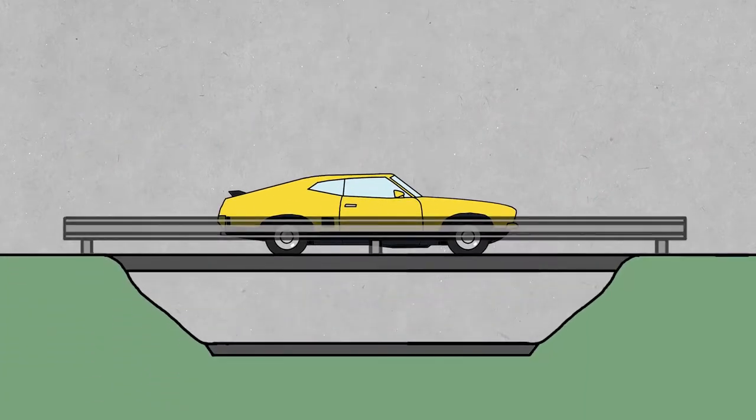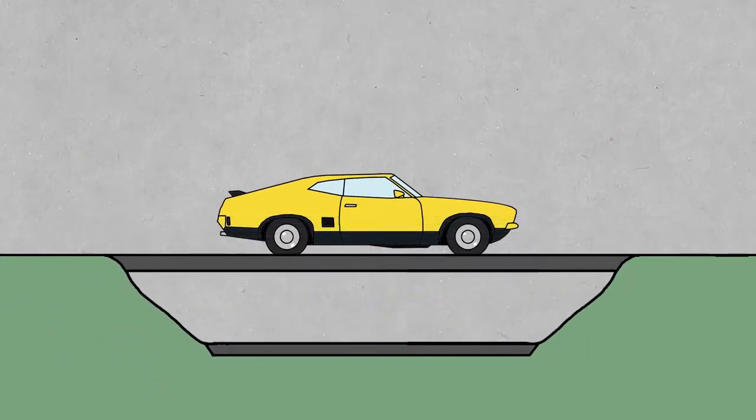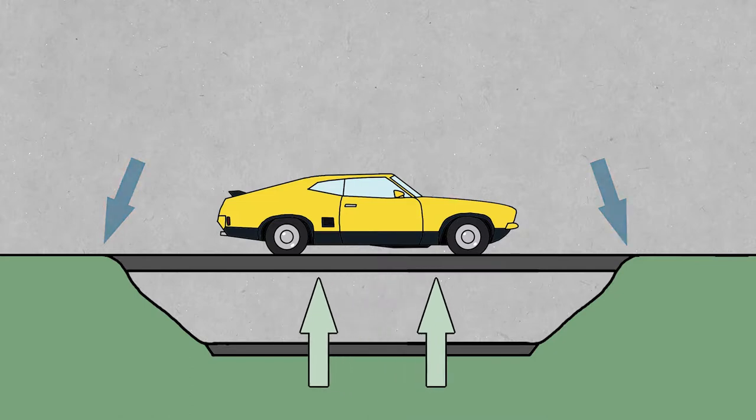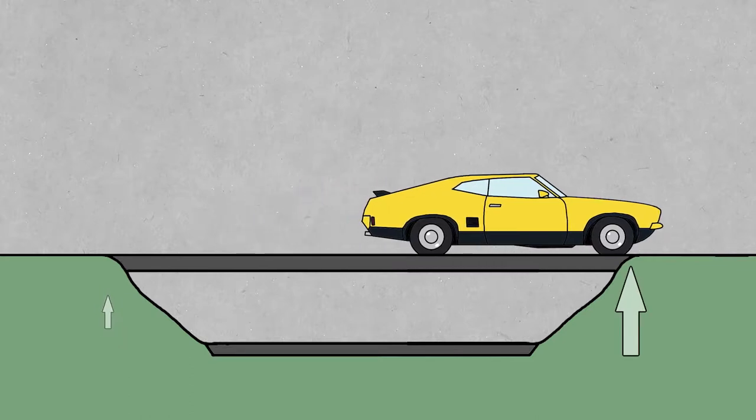To keep things simple, let's pretend the bridge is weightless, or at least very light. We know that the ground is pushing up with 13 kilonewtons, but where is that force actually coming from? The bridge is supported at each end, and if the car is in the middle, it's obvious that the force is coming equally from each end of the bridge. But what happens when the car is off to one side?